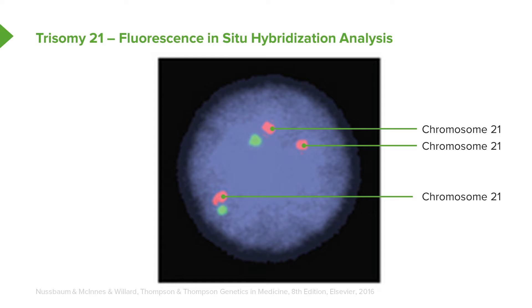You can clearly see that there are three chromosome 21s. So after an amniocentesis sample, the chromosomes can be analyzed, and if we see trisomy of 21, then there are choices that could be made by that mother or parent pair.